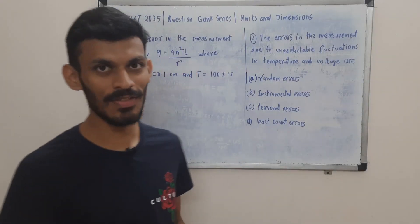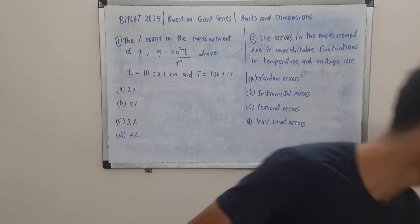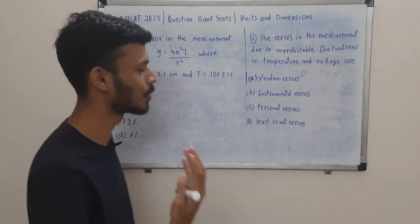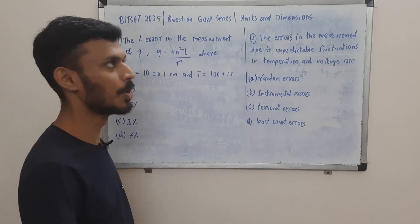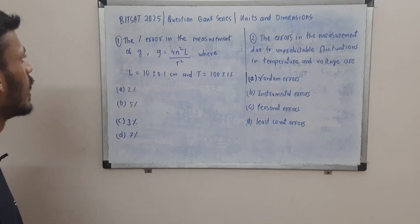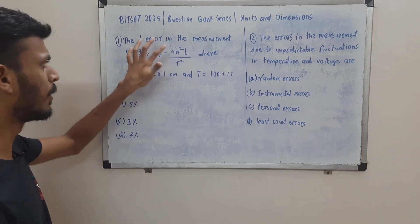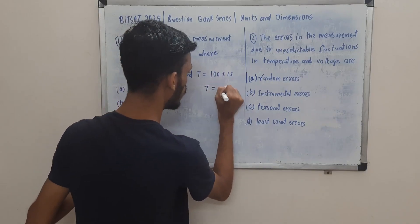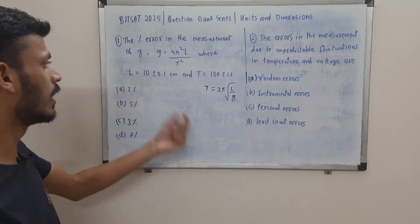Let's begin our practice with the questions. By the way, all these questions are picked up from Fodou Club — I'm just telling you the source so you know the questions are credible. First, we are supposed to find the percentage error in the measurement of G. G is given as this — they might not give you this formula; you are expected to know it from T = 2π√(L/G). From there you can make G the subject and find the error, given L and T with their respective error bars δL and δT.